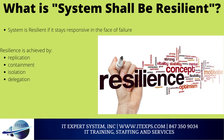What does it mean for a system to be resilient? A system is resilient if it stays responsive in the face of failure. Resilience is achieved by: Replication, Containment, Isolation, and Delegation.